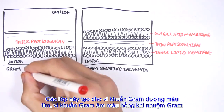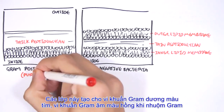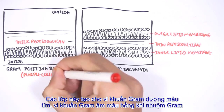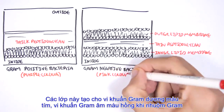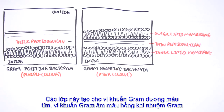These layers are what give gram-positive its purple color upon gram staining, and gram-negative bacteria its pink color upon gram staining.